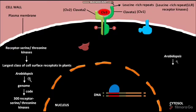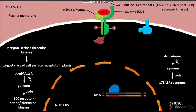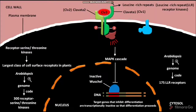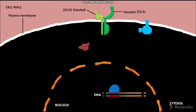The Arabidopsis genome codes for about 175 LRR receptors. The Rho family GTPase then binds to the phosphorylated Clv1 or Clv2 receptor and gets activated. The activated Rho family GTPase then induces a MAPK downstream signaling cascade that inhibits a gene-regulatory protein in the nucleus called Hustel. As a result, Hustel becomes inactive, and the target genes that inhibit differentiation are transcriptionally inactive, so that differentiation proceeds.